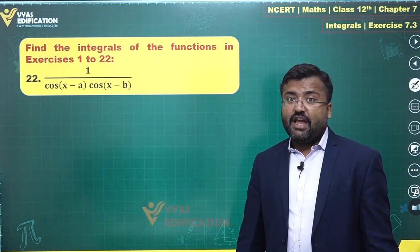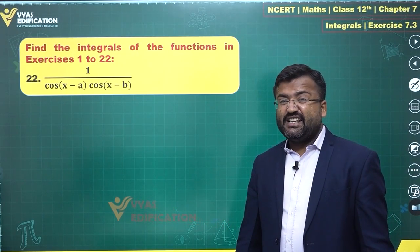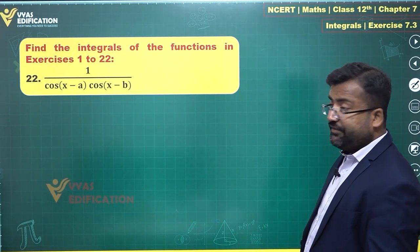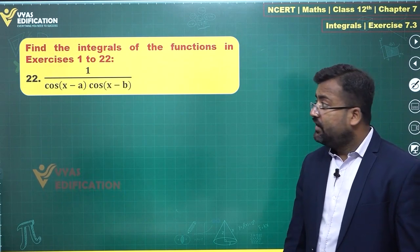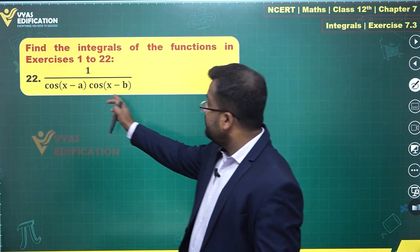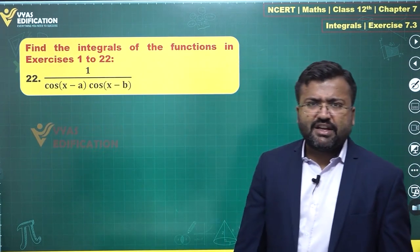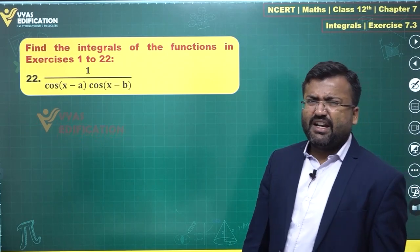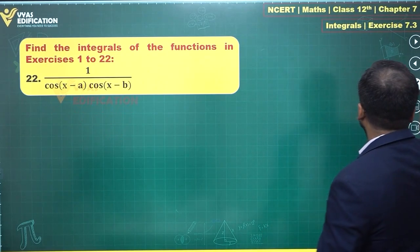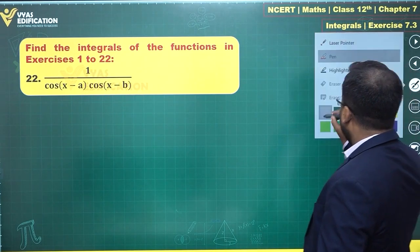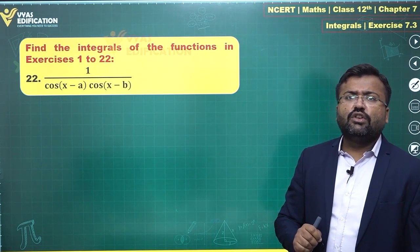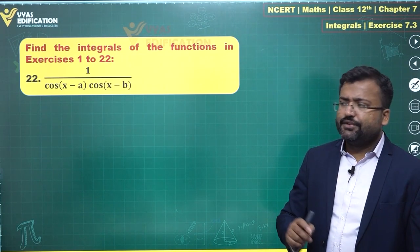In the 22nd question, we have a pretty interesting integration expression. We have cos(x - a) and cos(x - b) — complicated, yes, but these are linear expressions that can be solved easily if you know certain things.